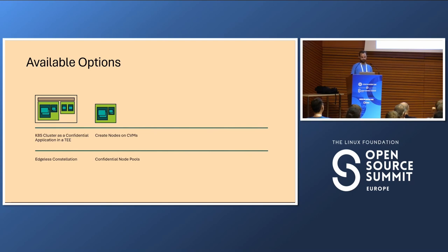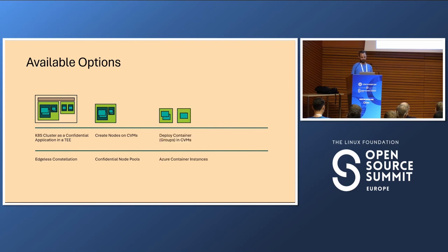Another option is to create nodes on CVMs — confidential node pools. This looks nice at first, but the control plane controls our nodes, and we have the kubelet, daemon sets, and other items deployed that we don't automatically consider trusted. There's also the option of discarding pods and nodes entirely, deploying container groups in CVMs outside of Kubernetes. That works pretty well, but you miss out on all Kubernetes integrations and the ecosystem, and for larger deployments a Kubernetes interface is often a requirement.